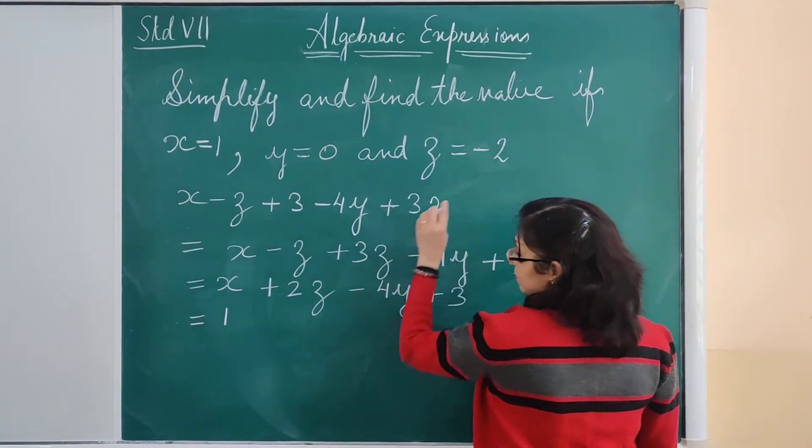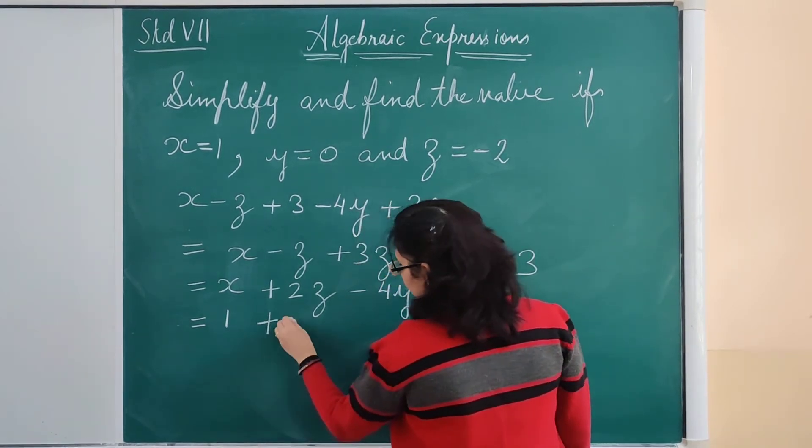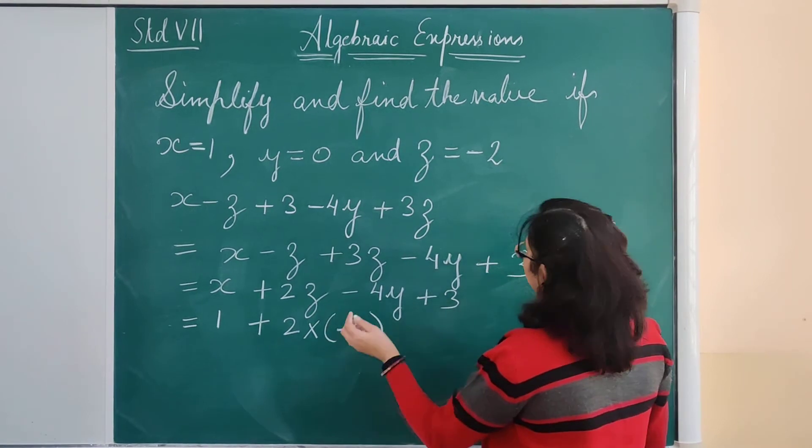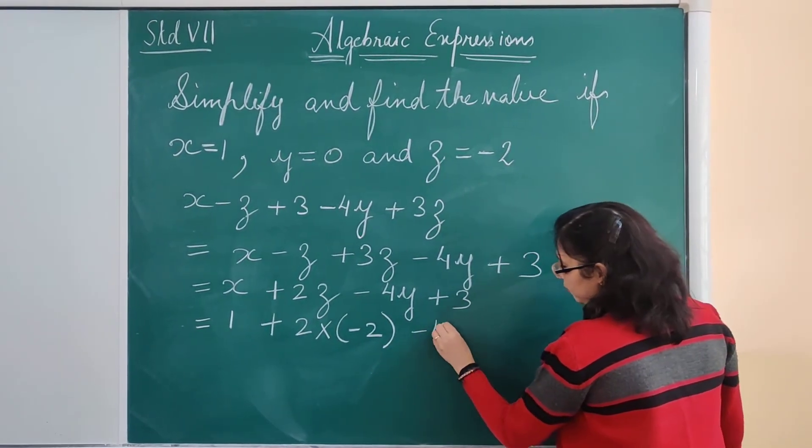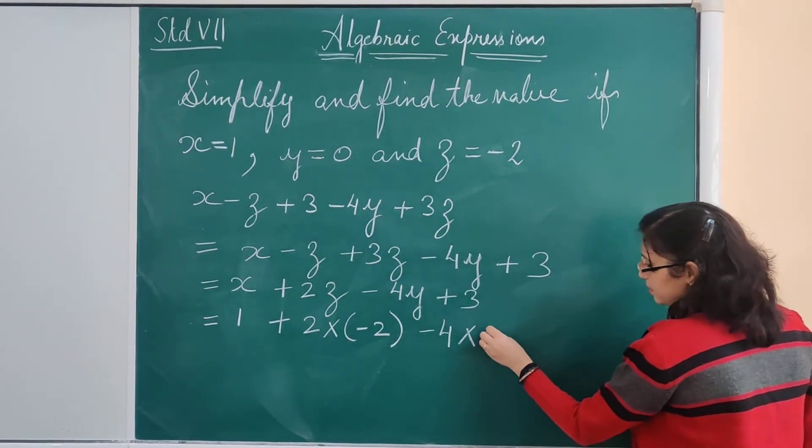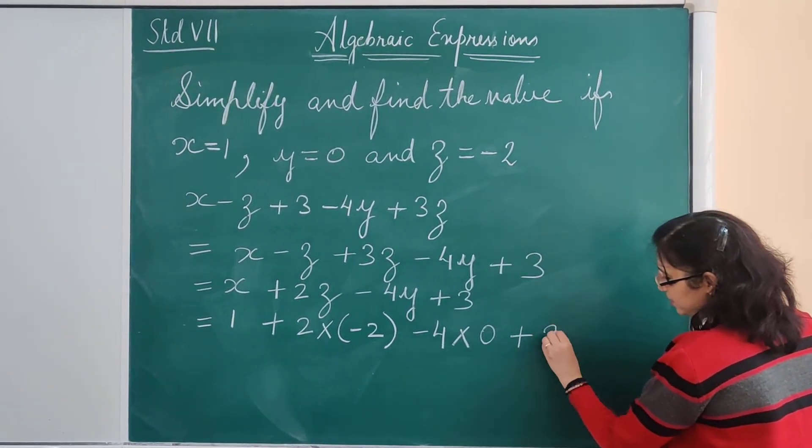The value of z is minus 2, so 2 multiplied by minus 2. And minus 4 multiplied by y. The value of y is 0, plus 3.